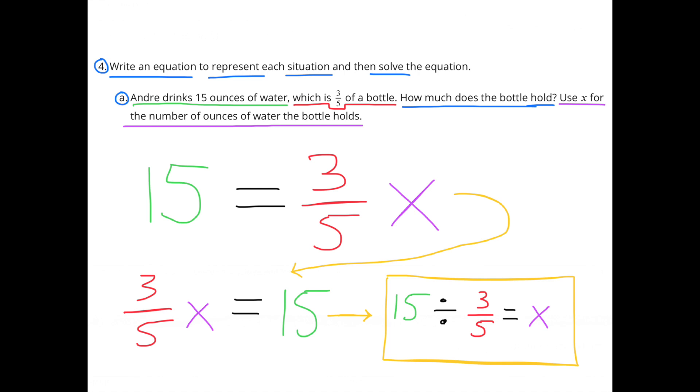Number 4. Write an equation to represent each situation and then solve the equation. A. Andre drinks 15 ounces of water, which is three-fifths of a bottle. How much does the bottle hold? Use x for the number of ounces of water the bottle holds.